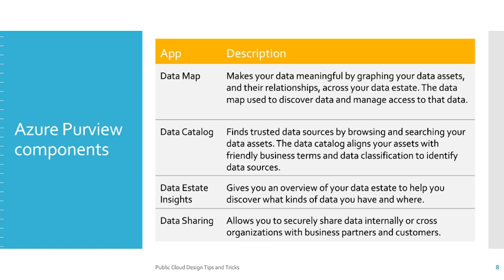Now let's try to realize what are the different components of Azure Purview. There are four components available: data map, data catalog, data estate insights, and data sharing. The data map makes your data meaningful by graphing your data assets and their relationships across your data estate. If your data has different relationships with other data systems, you can find a graphical view in the Azure Purview portal. The data map is also used to discover data and manage access to that data — who can access it, where they can access it, and what promotion labels should be applied. These are all different rules that you can apply.